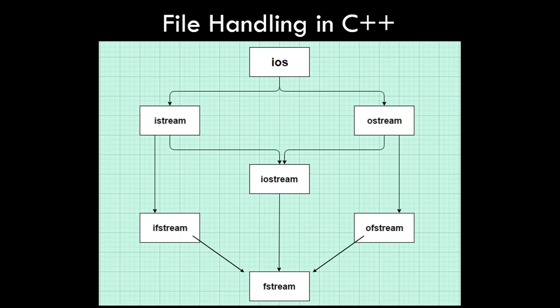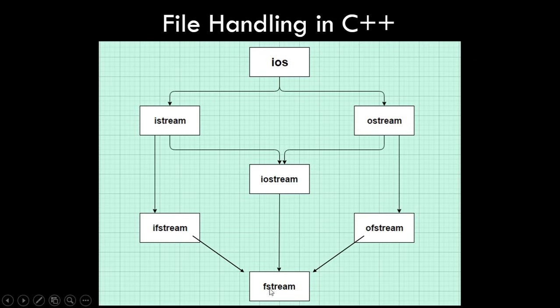What if you don't want to perform input/output on the terminal? In that case we want to perform input/output in a file. For that we have one more header file known as fstream. Using this fstream header file we have two classes — ifstream and ofstream. To take input we use ifstream and for output we use ofstream. We will be creating variables of ifstream and ofstream, and I'll show you an example so you get a better understanding of how to perform file handling.